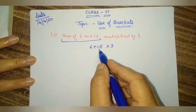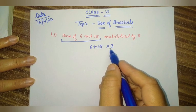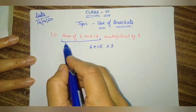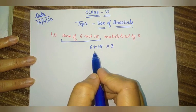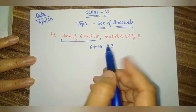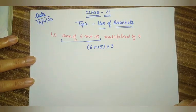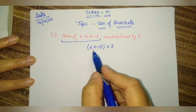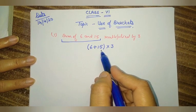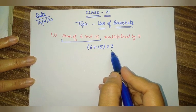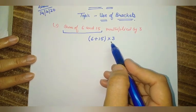Students, if we write this statement without brackets, that means only 15 is multiplied by 3. But according to the equation, the sum of 6 and 15 — both — should be multiplied. So how can we express this? We use the bracket to make this first operation separate, meaning first we do the addition, then after the result we multiply by 3. So students, now you understand why we use the bracket.